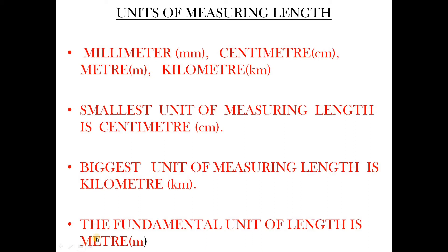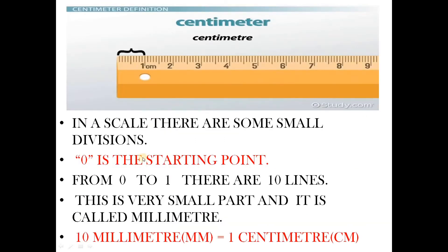Generally we use meter to measure things. Let's look at the scale. Here are some small divisions. This is the zero point — zero is the starting point. From zero to one, there are thin lines.